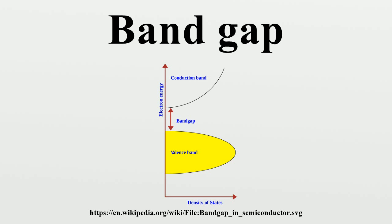In graphs of the electronic band structure of solids, the band gap generally refers to the energy difference between the top of the valence band and the bottom of the conduction band in insulators and semiconductors. It is closely related to the HOMO-LUMO gap in chemistry.